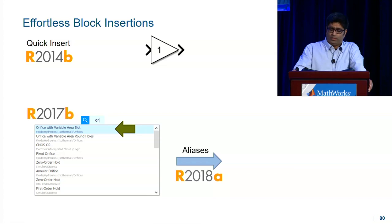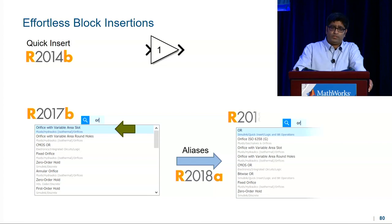So in 18A, we added what we call aliases. Now when I search for the OR block, I get the logical operator block that's pre-configured with the OR operation. And the orifice is still available if that's really what I wanted.